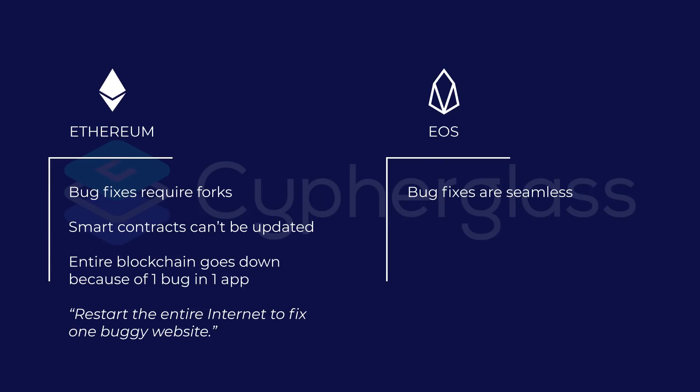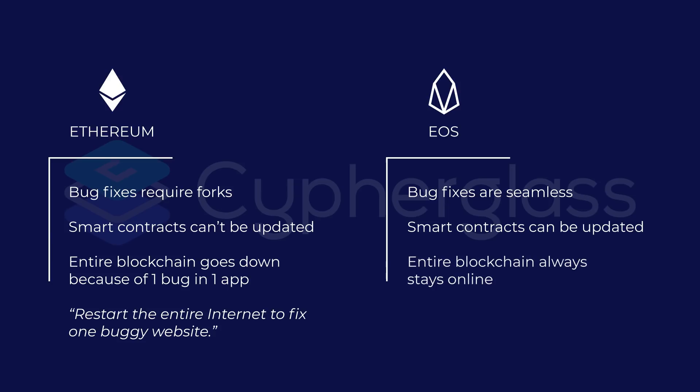If a bug is found in an individual EOS smart contract — like one that would power a game like EOS Dice, which has been so popular recently — it can easily be paused, fixed, and then redeployed without affecting the entire chain. This is more like letting individual website owners fix the bugs in their websites without having to turn off every other website on the internet. It makes a lot more sense.